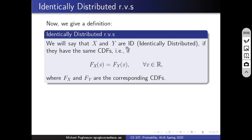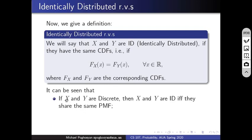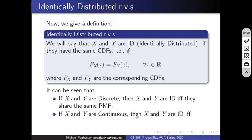We will use the notion of identical distribution later when we talk about important limit theorems. We say that X and Y are identically distributed (ID) if they have the same CDFs — that is, F_X(x) = F_Y(x) for every x. If X and Y are discrete, they are ID if and only if they share the same PMF. If they are continuous, they are ID if and only if their PDFs coincide for almost all x.